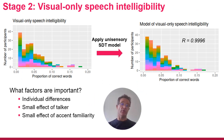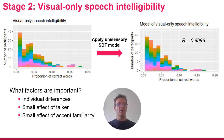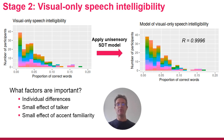We then model the visual-only conditions in a similar process, trying to capture as much of the variability in unisensory processing as possible. We find that individual differences are again very important. We also find a small effect of which talker is talking — some are easier to lip read than others — and a small effect of whether people are familiar with the UK English accent.